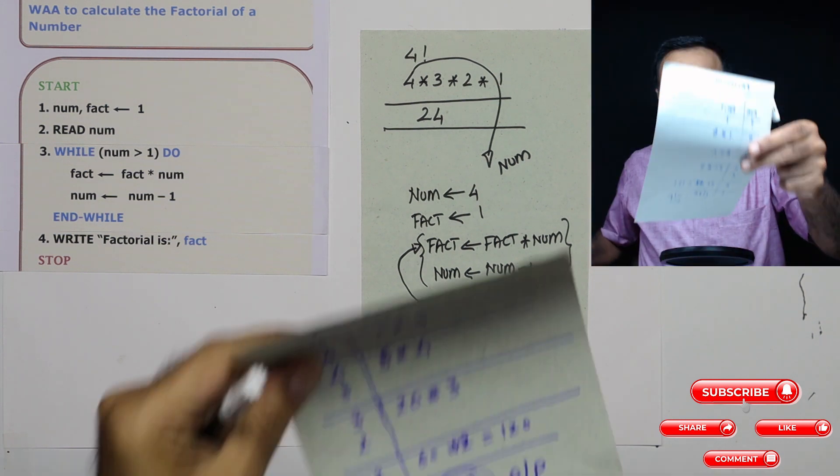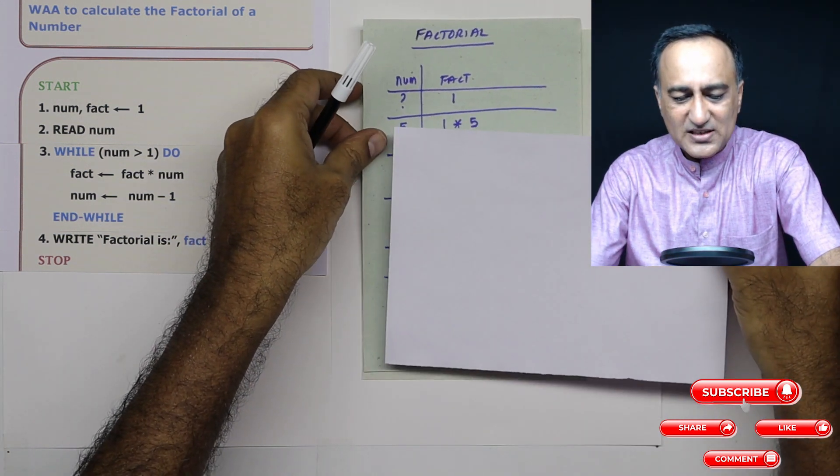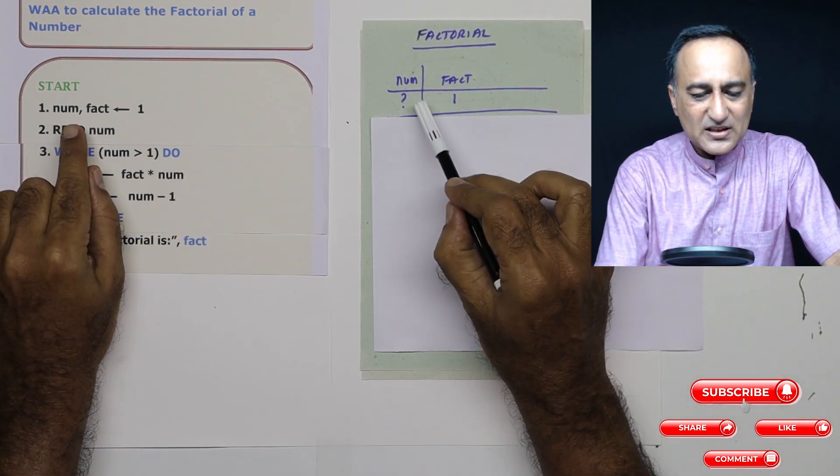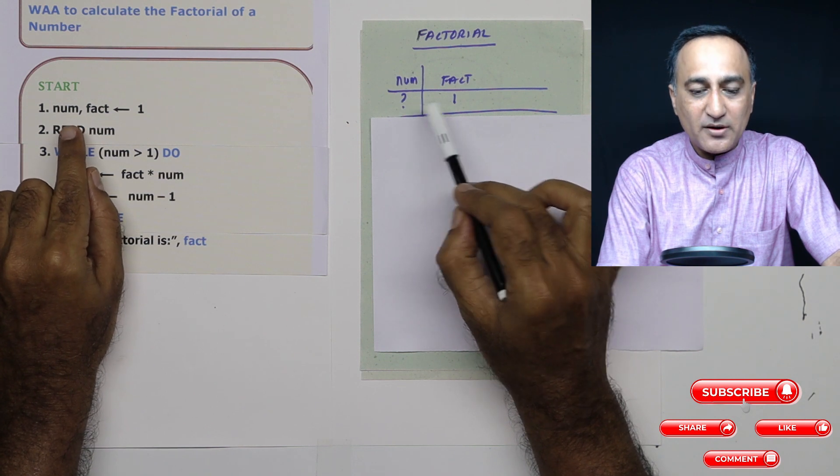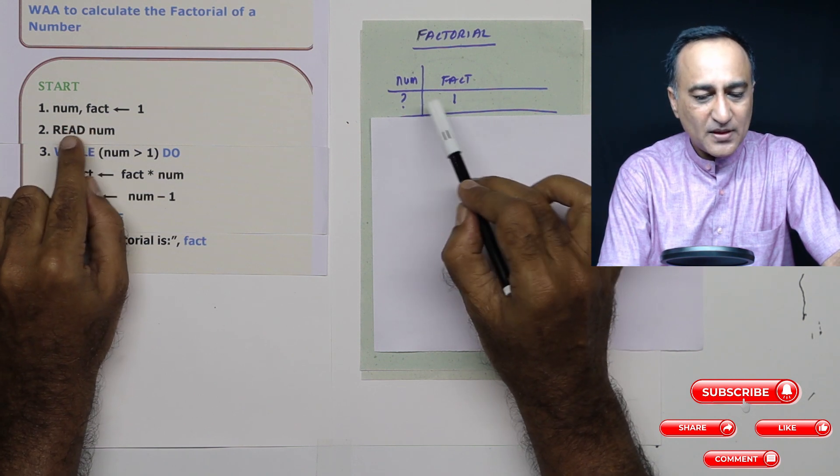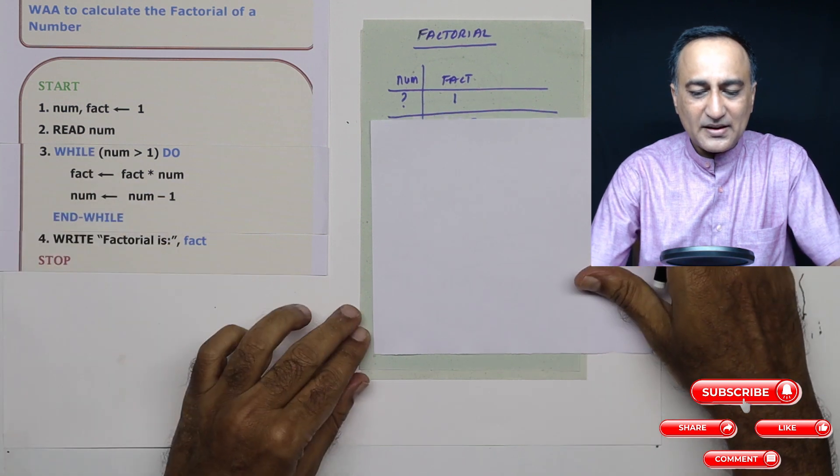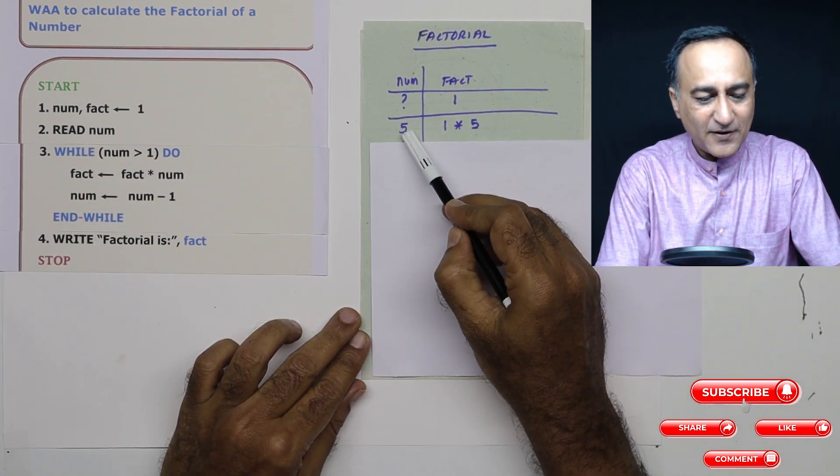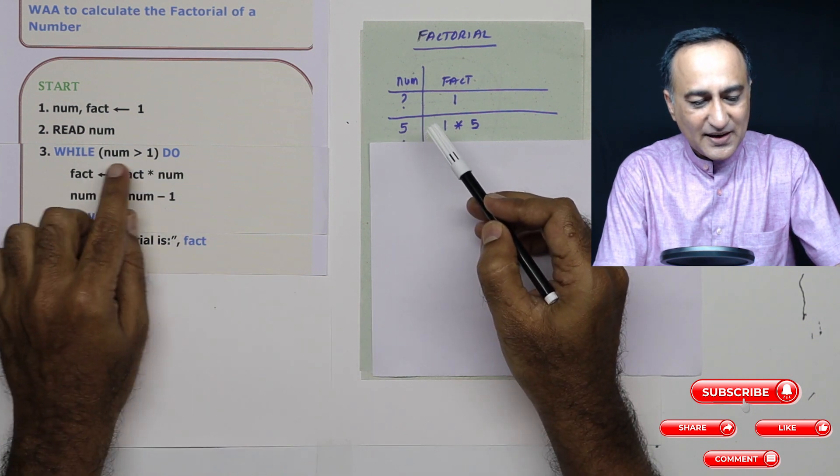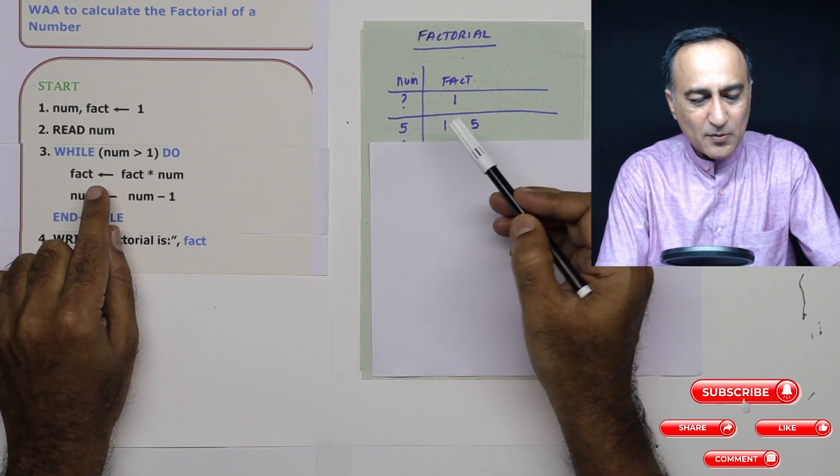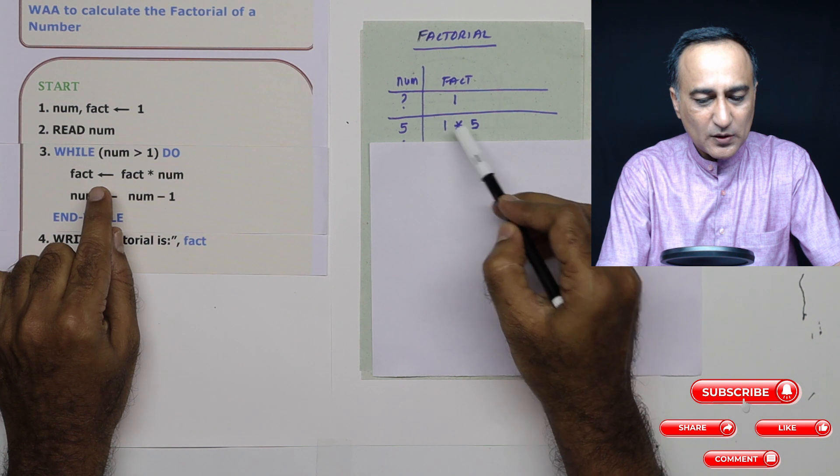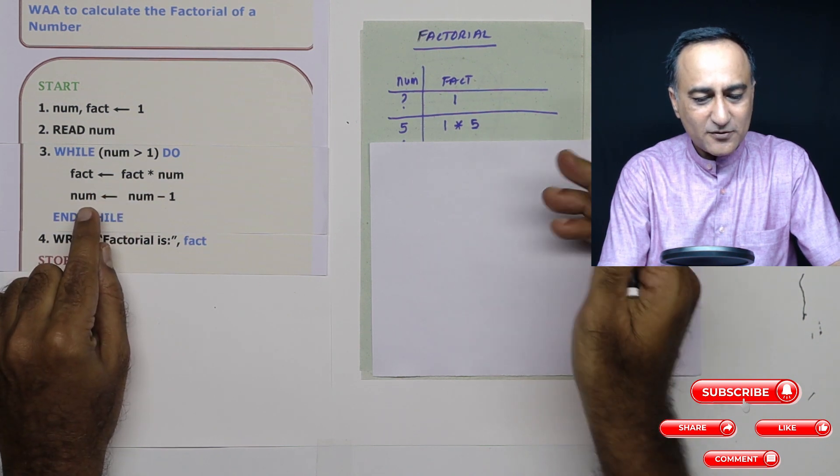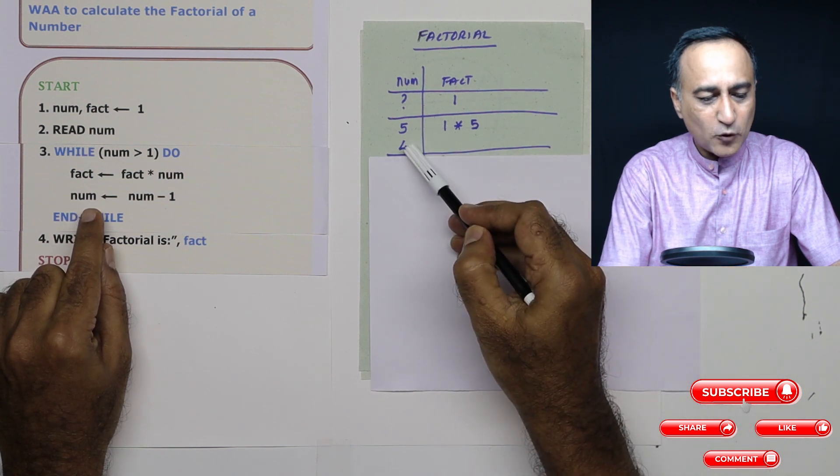But just as we have a habit of testing every input, we will go ahead and test it. So let's say number is I do not know what value the computer will give me, fact is one. I'm going to read the number in step number two. Let's say I read number as five. Five is greater than one is true. So I'm going to come in here. So fact is one, one into five, fact now becomes five. Number at the end of this step must be reduced by one, it becomes four.